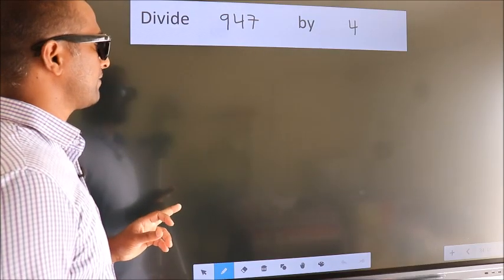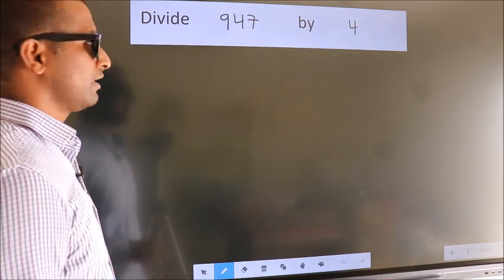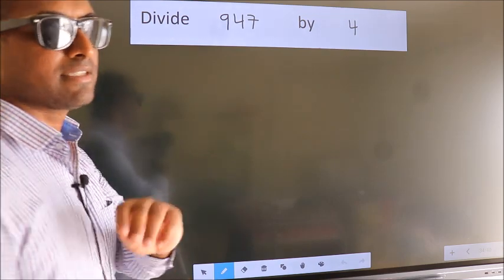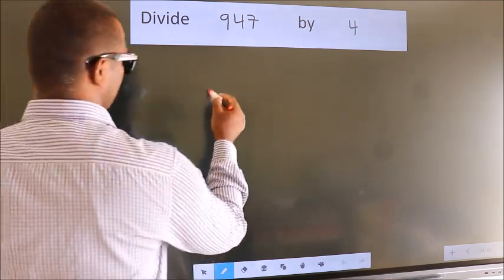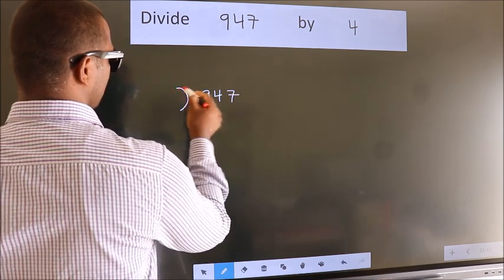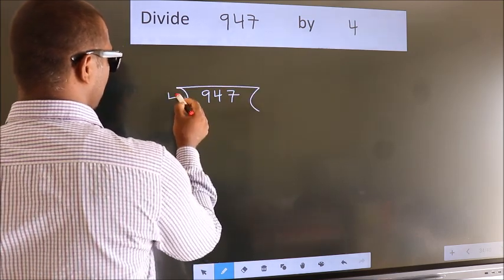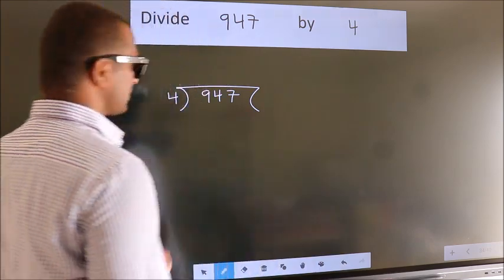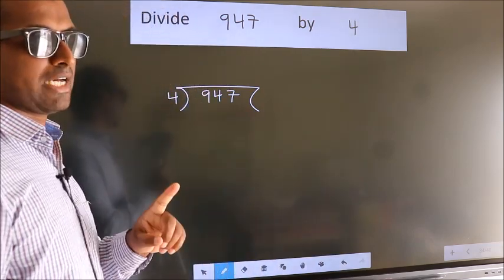Divide 947 by 4. To do this division, we should frame it in this way. 947 here, 4 here. This is your step 1.